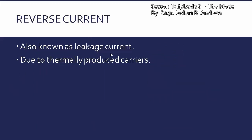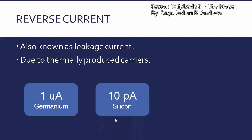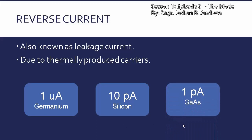Reverse current is also known as leakage current. This is due to thermally produced carriers — because of the surrounding temperature, kaya nagkakaroon tayo ng small amount of electron flow during reverse current. So kung pag-uusapan natin yung mga semiconductor materials: for germanium diode, the reverse current is around 1 micro ampere; for silicon diode, the reverse current is around 10 pico amperes; and for gallium arsenide, the reverse current is around 1 pico ampere.